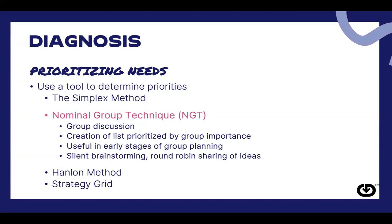One prioritization approach creates space for multiple voices to be heard through group discussion and silent brainstorming that ends in a round robin of sharing ideas, so that everyone has a chance to contribute. This ultimately creates a list of prioritized actions by group importance, and sometimes this method is used in connection with a different model for the second half of the process.